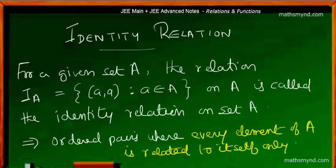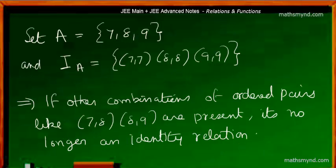As I already told, the key point is that here the ordered pairs are such that every element of that set, the element of the particular ordered pair is related to itself only. Let's take a simple example so that we can understand the concept.